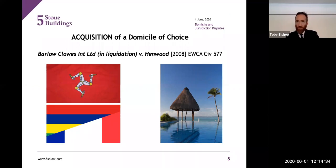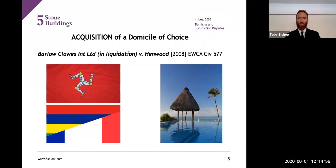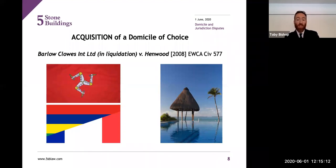Peter Henwood was born in Solihull to a father domiciled in England, so England was without doubt his domicile of origin. He had a tragically difficult childhood: his father died when he was seven of lung cancer, his mother died when he was eight aged only 33, he was sent to live with a violent uncle whose wife also died, and he was then put in a boarding school. As soon as he was old enough to leave he left England — it was filled with terrible memories.